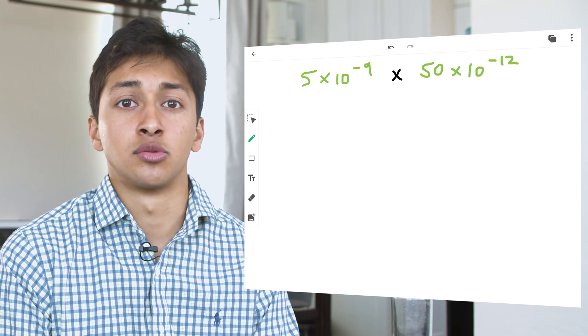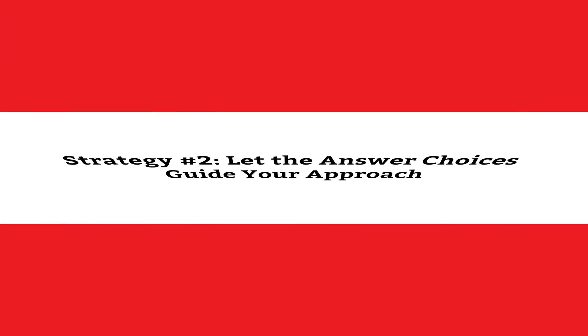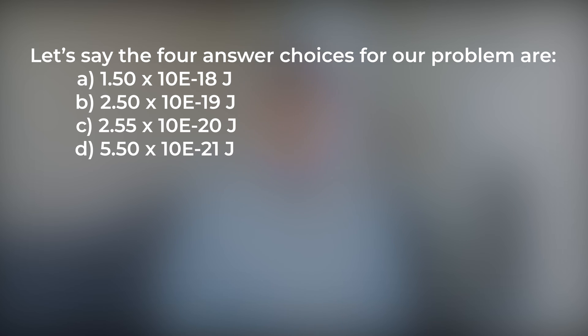Use it to your advantage with strategy number 2. Let the answer choices guide your approach to math problems. Let's say the 4 answer choices for our problem are a) 1.5 times 10 to the negative 18th joules, b) 2.5 times 10 to the negative 19th joules, c) 2.55 times 10 to the negative 20 joules, and d) 5.5 times 10 to the negative 21 joules.